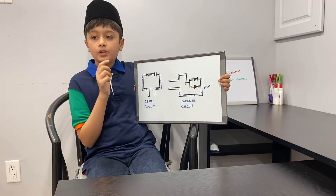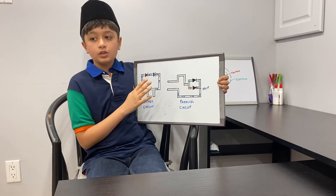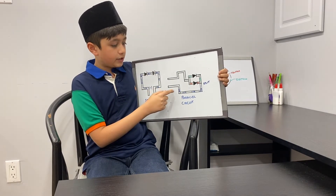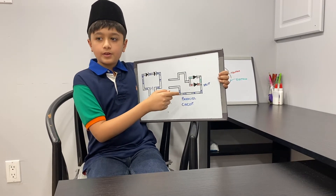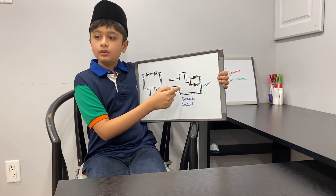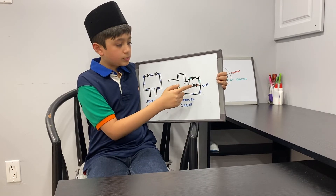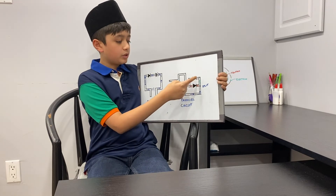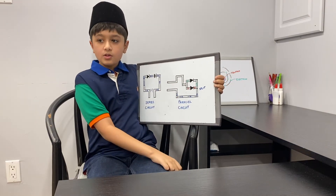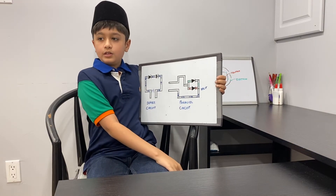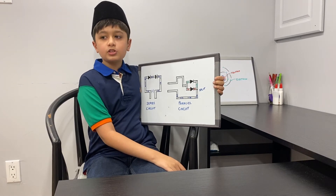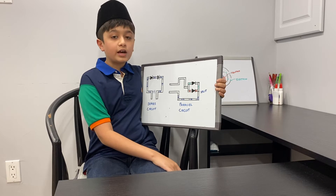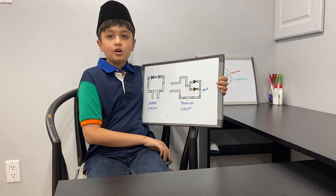A series circuit can only take one path — up here to over here. In a parallel circuit, the electrons don't all take the same path. The electric current splits: some electrons take the red path and some electrons take the green path. Of course, the circuits that power something like a calculator are much more complicated.